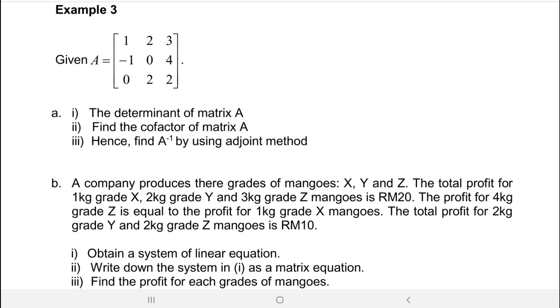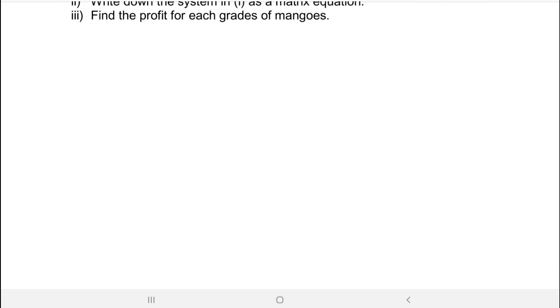The first question they ask for the determinant of matrix A. So what is the determinant of matrix A? The determinant will be here by using the first column. The determinant will be 1 times 0, 4, 2, 2, plus negative 1 times 2, 3, 2, 2.